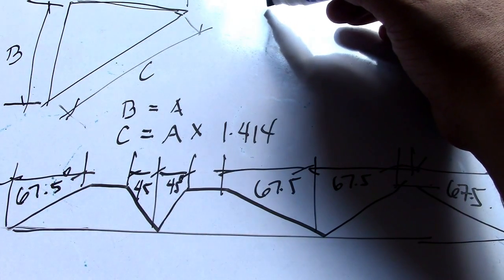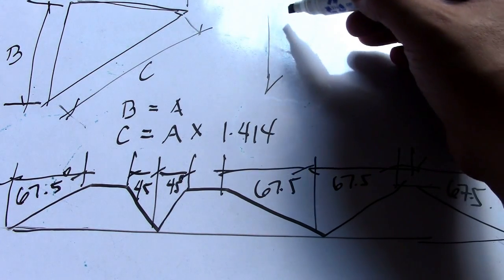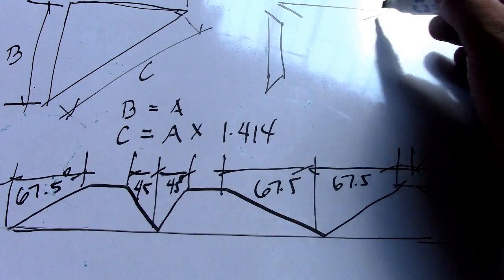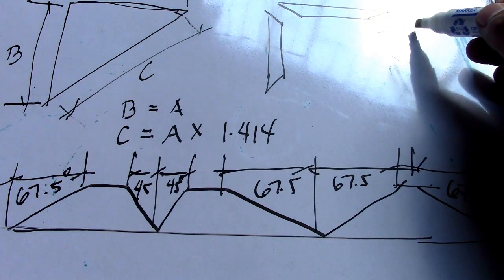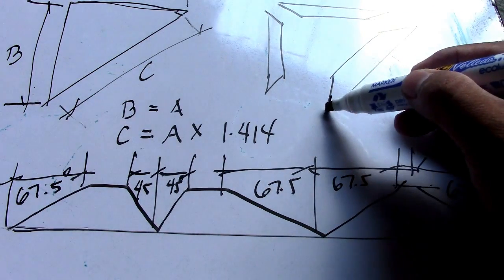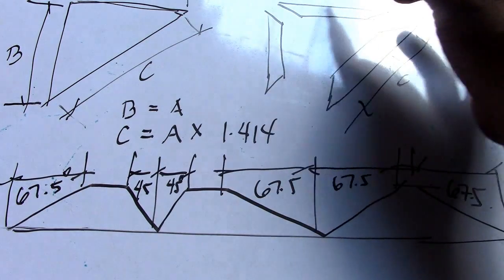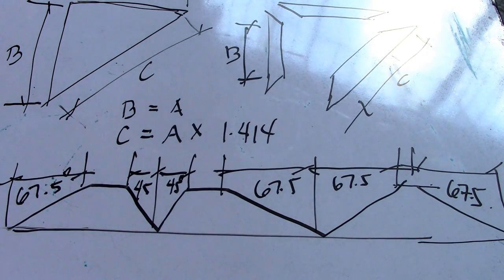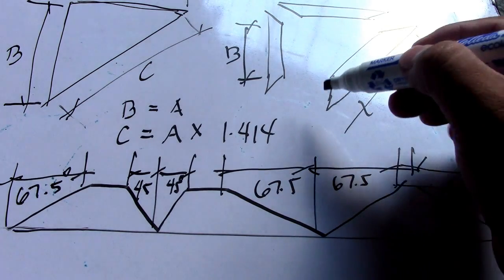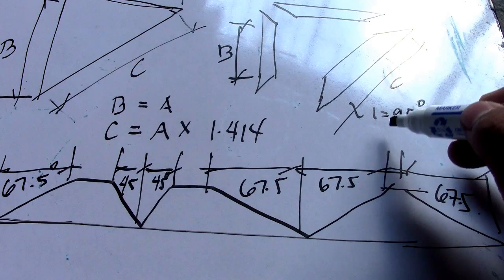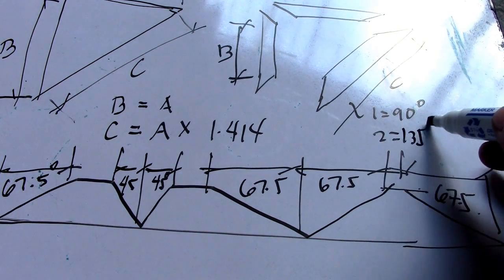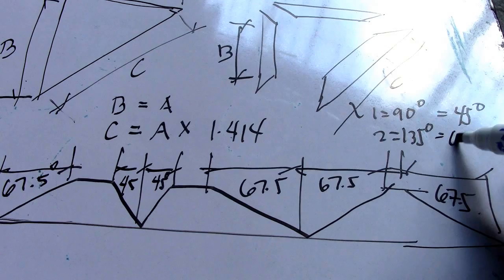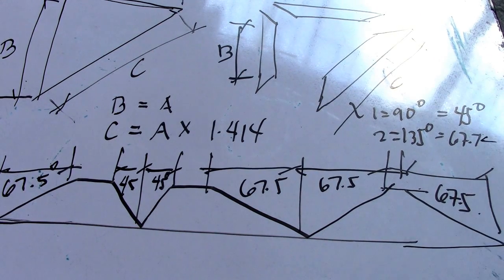I will draw and mark a line here as well. So we have dimension C, dimension A, and dimension B. We have 180 degrees going to 135 degrees, leaving 45 degrees of cut and 67.5 degrees of cut.